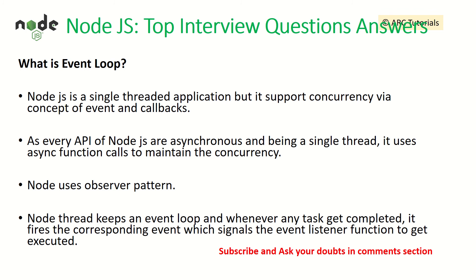What is the event loop? Node.js is a single-threaded application but it supports concurrency via the concept of events and callbacks. Since every API of Node.js is asynchronous, being a single thread it uses async functions to maintain concurrency. Node uses the observer pattern — the Node thread keeps an event loop, and whenever any task is completed it fires the corresponding event, which signals the event listener function to execute. Node.js makes heavy use of events and callback mechanisms.